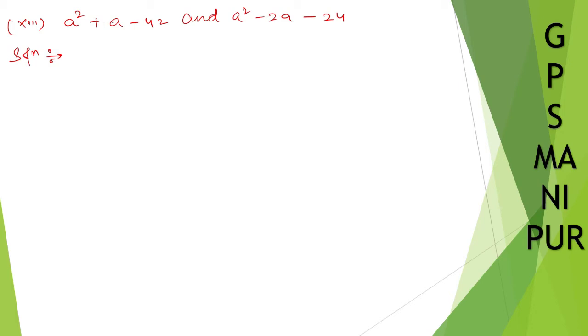Solution: resolving the given polynomials into factors, we have a² + a - 42 equals... Now we are going to do something to this one, and what we can do is we can split the middle term.